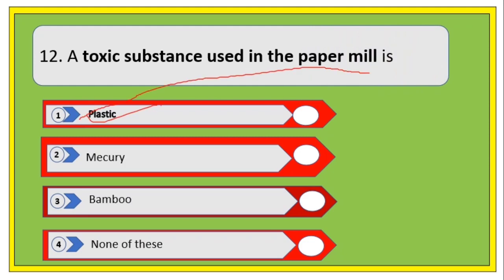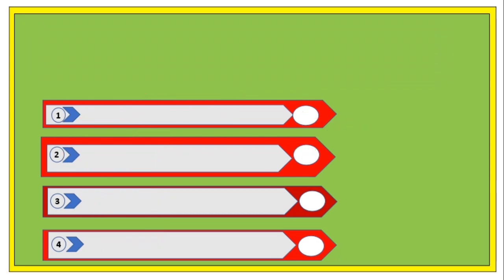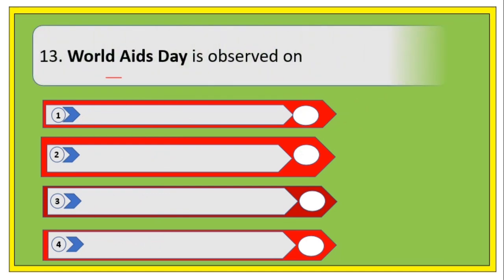A toxic substance used in paper mills — options are plastics, mercury, bamboo, or none of these. The right answer is mercury. This is a very important question. Mercury is used in paper mills and most paper mill laborers have suffered from diseases because of it.